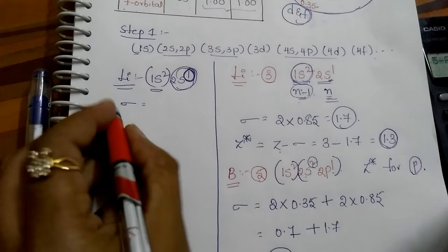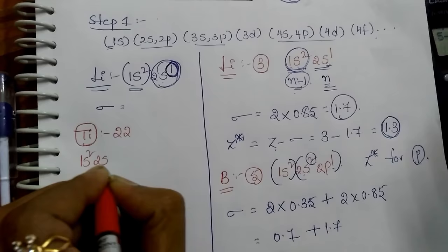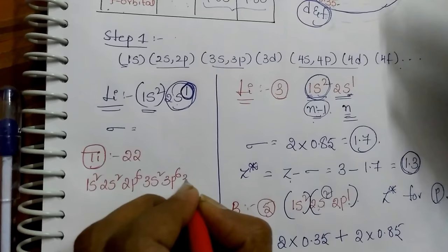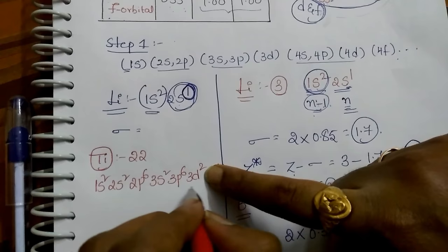Let us find the effective nuclear charge for titanium, atomic number 22, electronic configuration: 1s², 2s², 2p⁶, 3s², 3p⁶, 3d², 4s². Arranging and grouping: D separately from SP. We write 3d² and 4s². The question is to find the effective nuclear charge for the d electron.